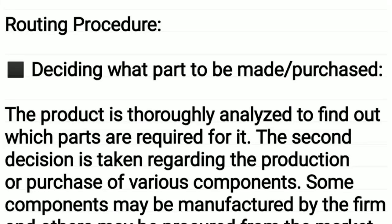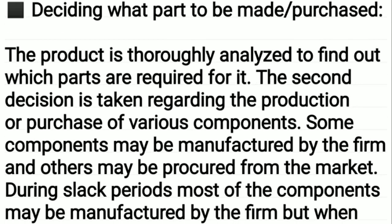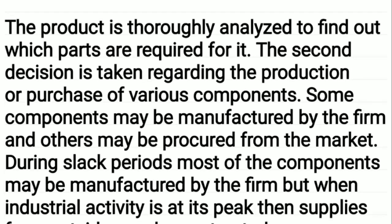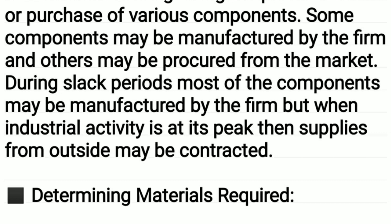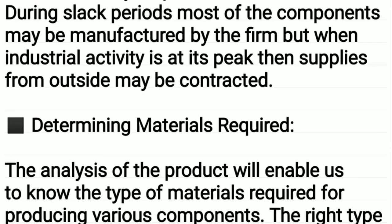In the routing procedure, a key decision is deciding what parts are to be made or purchased. The product is thoroughly analyzed to find out which parts are required. Some components may be manufactured by the firm and others may be procured from the market. During slack periods, most components may be manufactured by the firm, but when industrial activity is at its peak, supplies from outside may be contracted.